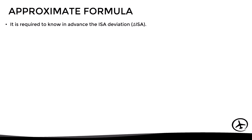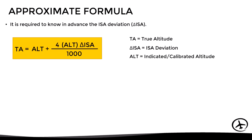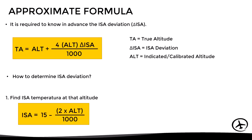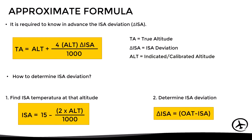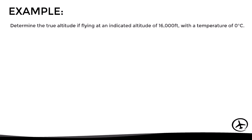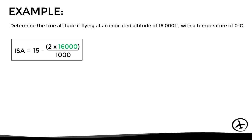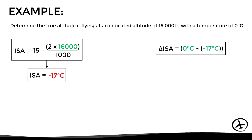Let's now see how to use the formula. It is required to know in advance the ISA deviation, using the formula: True Altitude = Indicated Altitude + (ISA Deviation × Indicated Altitude / 1000 × 4). The ISA deviation is determined by first calculating the standard temperature at that altitude using the ISA formula, then finding the difference relative to the actual temperature. For our example at 16,000 feet, replacing the altitude in the formula gives a standard temperature of −17°C. Since the actual temperature is 0°C, the ISA deviation is +17.